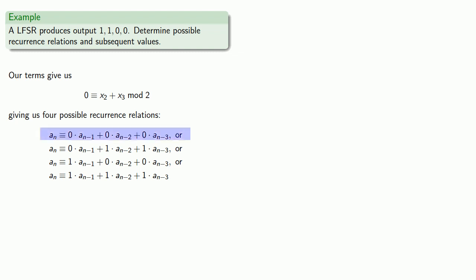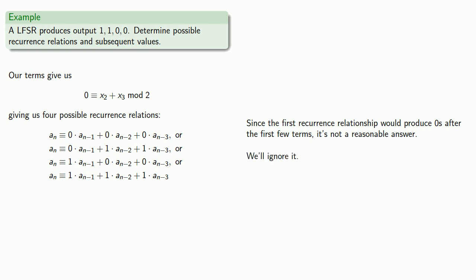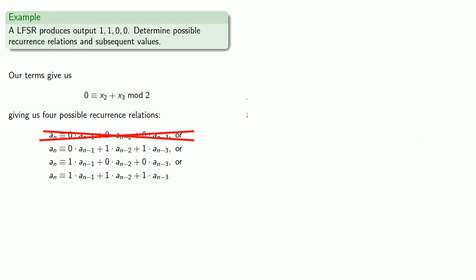Note that this first congruence relation is going to produce zeros after the first few terms, so it's not a reasonable answer if we are assuming this actually is meant to be a pseudo-random number generator. So we'll ignore this first possibility as unreasonable. If we look at our other possibilities, this second recurrence relation, an congruent to 0·an-1 + 1·an-2 + 1·an-3, is going to give us the sequence.